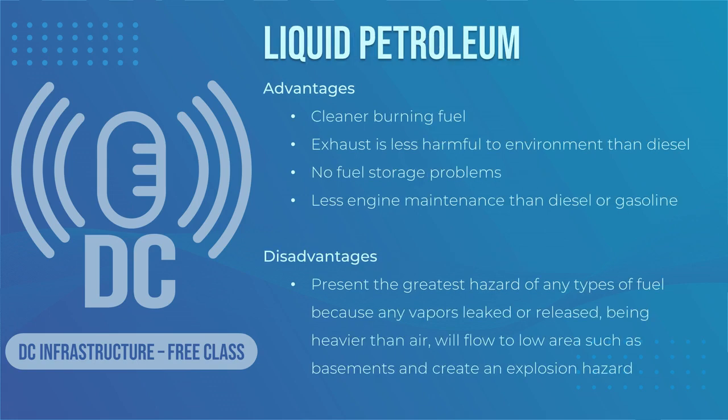The advantages of using a generator powered by liquefied petroleum are similar to those of natural gas. It is a clean burning fuel with less environmental impact than diesel, and the exhaust is less harmful to the environment. In addition, there are no fuel storage problems and less engine maintenance than diesel or gasoline generators. The biggest disadvantage is that liquid petroleum presents the greatest danger — if any liquid petroleum vapor leaks or escapes, as it is heavier than air, it will flow into low-lying areas such as basements and pose a potential explosion hazard.